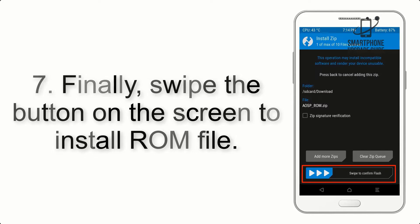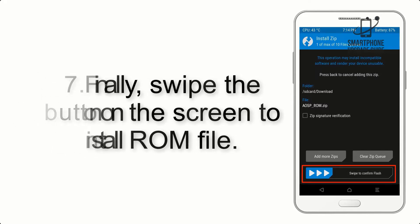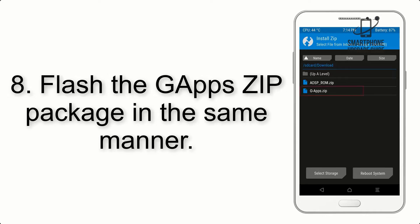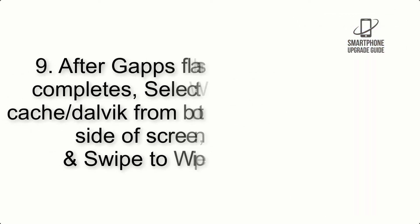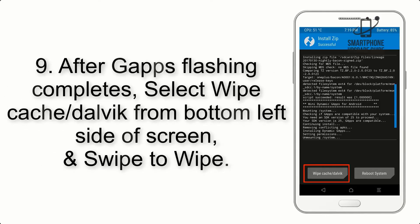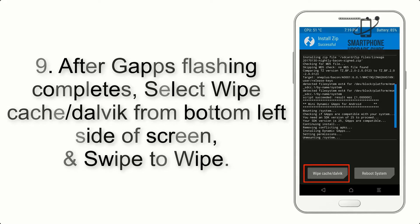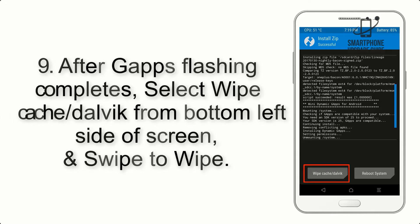Step 7: Finally, swipe the button on the screen to install the ROM file. Step 8: Flash the GApps zip package in the same manner. Step 9: After GApps flashing completes, select Wipe Cache and Dalvik from the bottom left side of the screen and swipe to wipe.